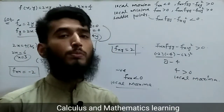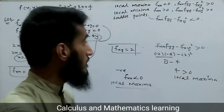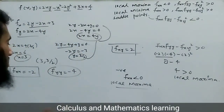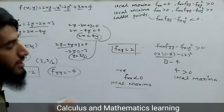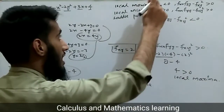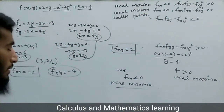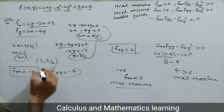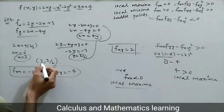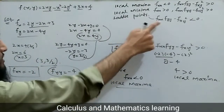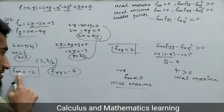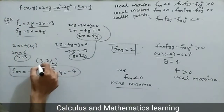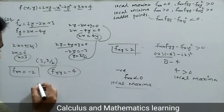Since the conditions for local maxima are met, the function does not give a saddle point here. A saddle point would require fxx·fyy minus fxy squared to be less than zero. That condition is not satisfied in this case, so we can only talk about local maxima or minima. A saddle point is possible only when that discriminant is negative at the critical point.